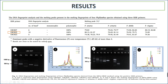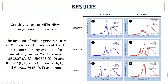UBC825 showed the highest number of bands — specifically 10 bands. For GC content, Phyllanthus urinaria had the highest GC content at 79.83%, while other species showed values of 75%, 76%, and 80% respectively.